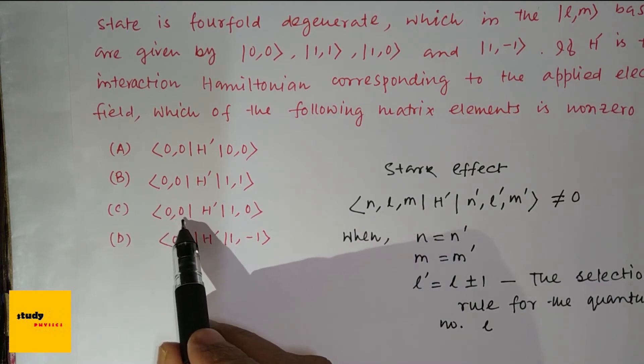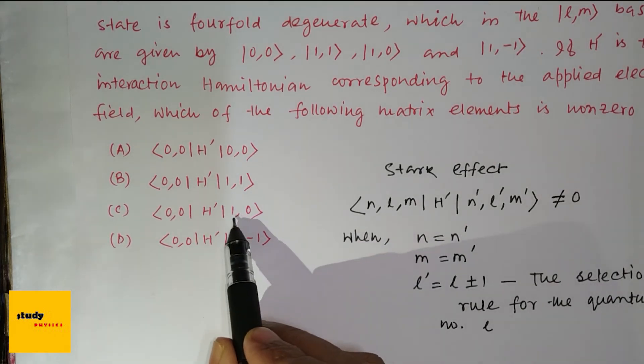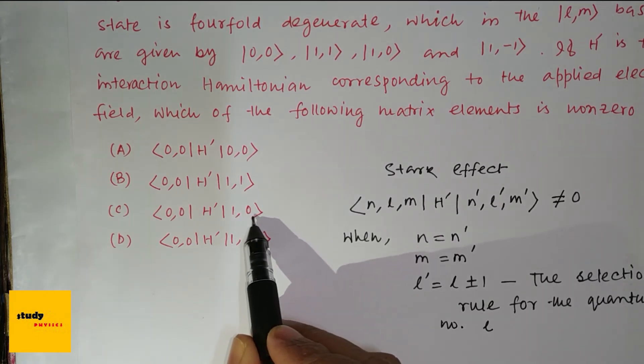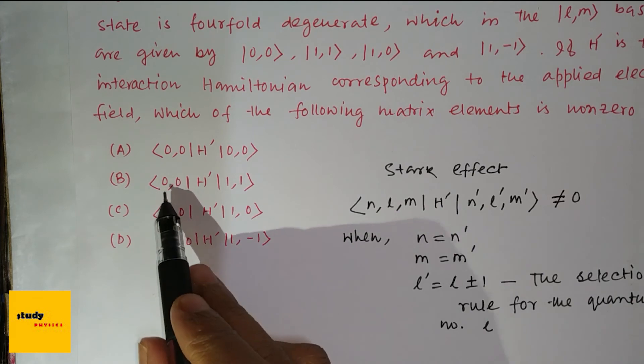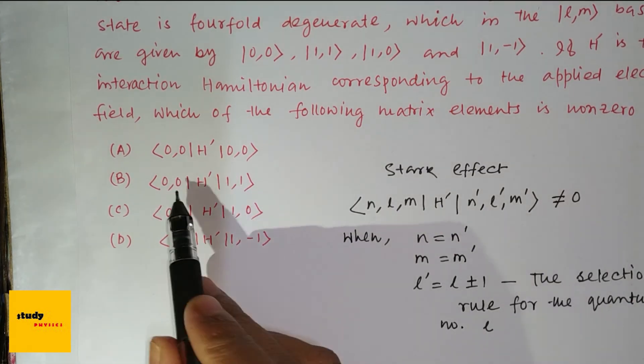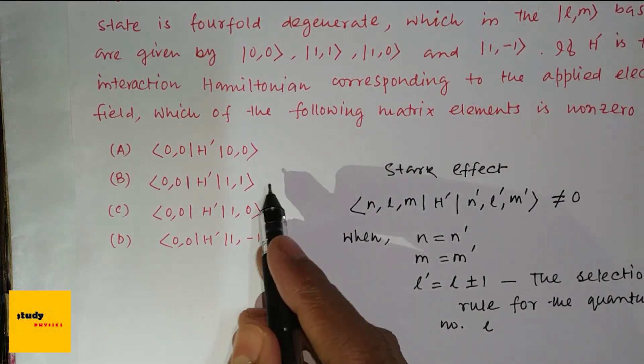So this is L and this is M. So this is L plus minus 1. So 1 and M is 0. So this condition is satisfied for 0, this is 1, 0, 1. This can't be happened.